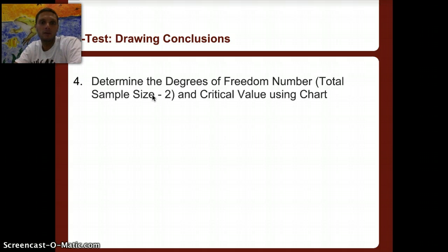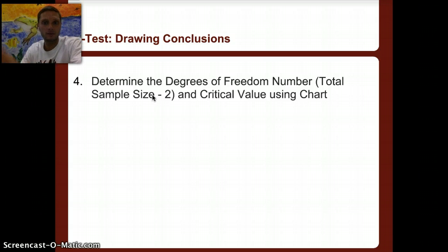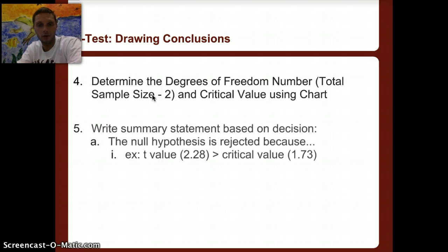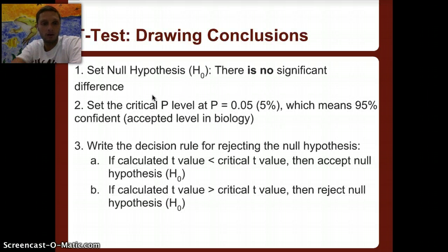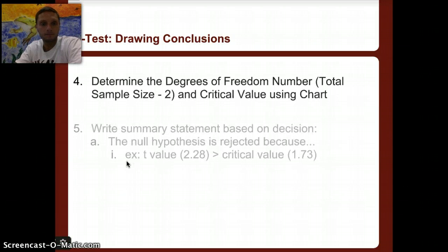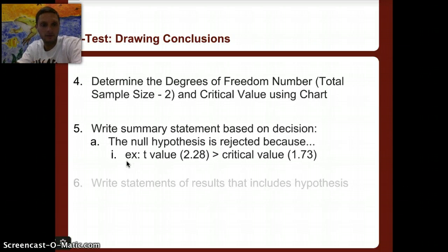Determine the degrees of freedom — total sample size minus 2, because you have two different samples. Then determine the critical value using a t-table. Write a summary statement based on your decision of whether the null hypothesis is rejected or accepted, and then write statements of results that indicate the hypothesis outcome.